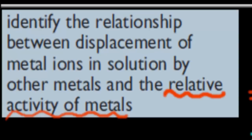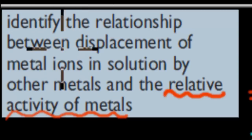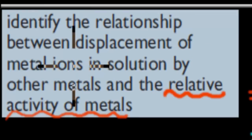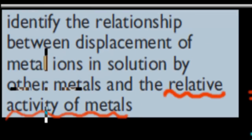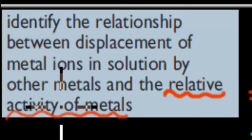Welcome back. In the last video, we talked about the displacement of metal ions from solution onto the metal itself, and we talked about how that was really important when it comes to transfer of electrons, because without the transfer of electrons from one metal to the other, it wouldn't happen. In this video, we're going to cover something quite related, which is the next stop point: identify the relationship between displacement of metal ions in solution by other metals and the relative activity of metals.